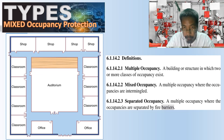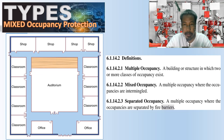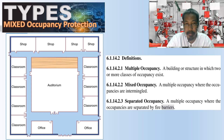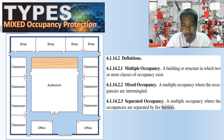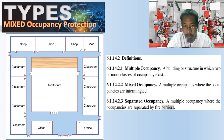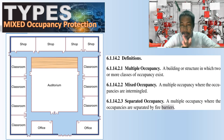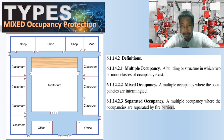Let's define the differences between multiple occupancy, mixed occupancy, and separated occupancy. Multiple occupancy is a building or structure in which two or more classes of occupancy exist. Mixed occupancy is a multiple occupancy where the occupancies are intermingled. Separated occupancy is a multiple occupancy where the occupancies are separated by fire barriers. So mixed occupancy and separated occupancy are the two types of multiple occupancies.